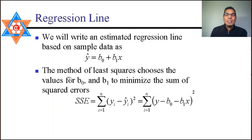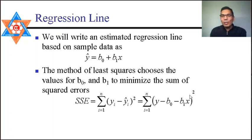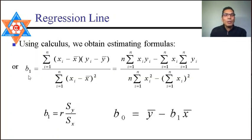To minimize the error term, where y is the observed data and ŷ is the estimated value, we minimize the sum of squared errors. Substituting ŷ = b₀ + b₁x into the expression, we use calculus to obtain the values of b₁ and b₀ that minimize the sum of squares due to error.